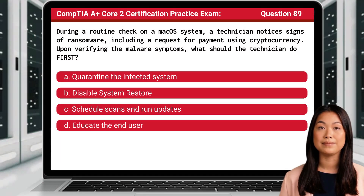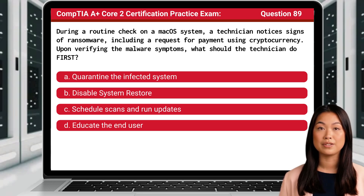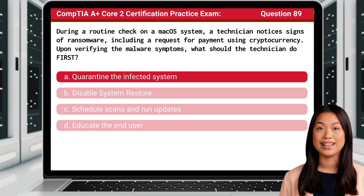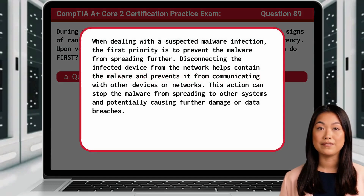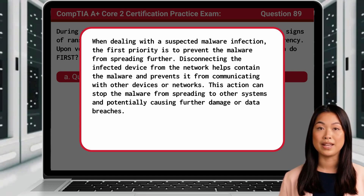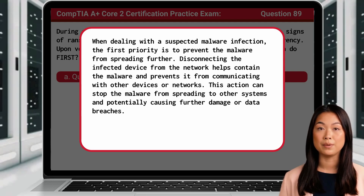Question 89: During a routine check on a macOS system, a technician notices signs of ransomware, including a request for payment using cryptocurrency. Upon verifying the malware symptoms, what should the technician do first? The answer is A, quarantine the infected system. When dealing with a suspected malware infection, the first priority is to prevent the malware from spreading further. Disconnecting the infected device from the network helps contain the malware and prevents it from communicating with other devices or networks, stopping it from spreading to other systems and potentially causing further damage or data breaches.